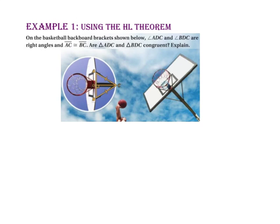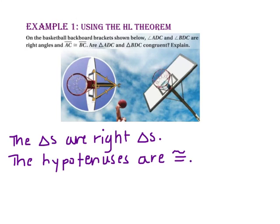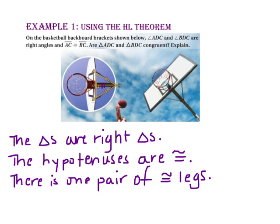In example one, we will use the hypotenuse-leg theorem. On the basketball backboard brackets shown below, angle ADC and angle BDC are right angles, and side AC is congruent to side BC. Are triangles ADC and BDC congruent? Since both triangles are right triangles and we have two congruent hypotenuses, we just need one set of congruent legs. By the reflexive property of congruence, side DC is congruent to side DC — that is our congruent pair of legs. So by the hypotenuse-leg theorem, triangle ADC is congruent to triangle BDC.